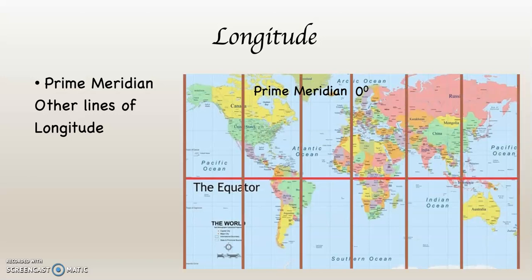Here again is the prime meridian. Now I've put lots of lines of longitude on this map. The technical scientific name for them is not lines of longitude — the technical scientific name is meridians. That's what we call all lines of longitude. Meridians are half circles, 180 degrees, drawn from pole to pole that connect points of equal longitude.